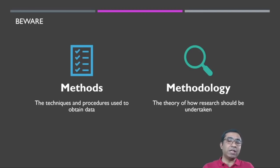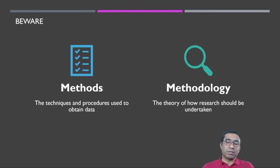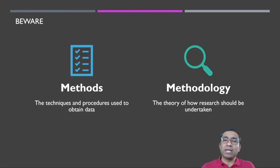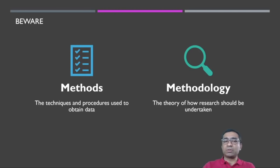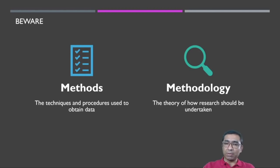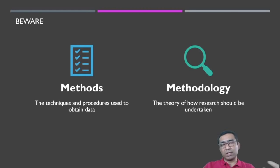This subject deals with research methodology, which starts with posing a research question or choosing a good research idea. Methods is basically just a subset of methodology, where we deal with data collection and data analysis procedures. So methods and methodology are entirely different — do not mix these two terms. This subject covers the full research process from A to Z.